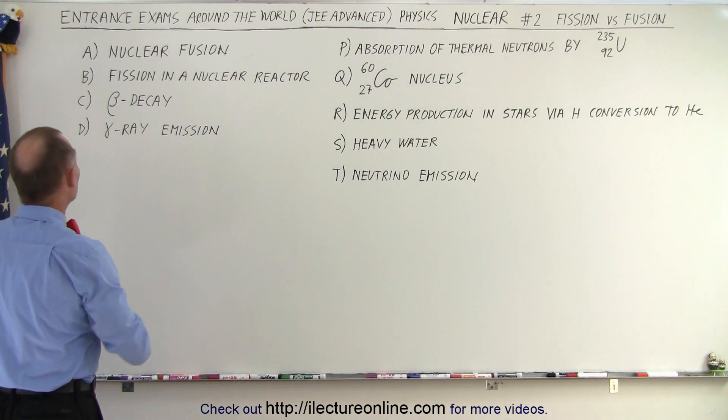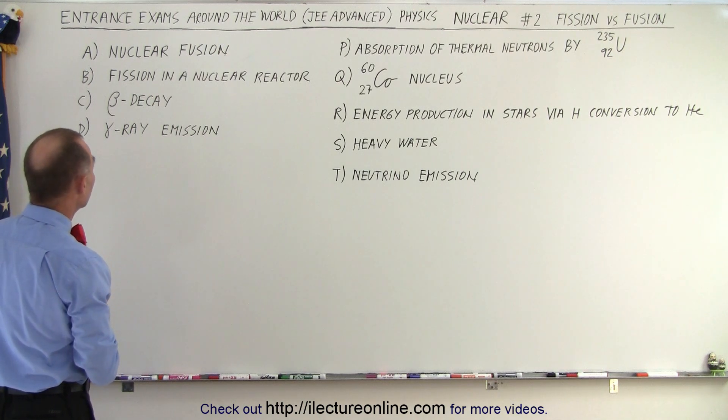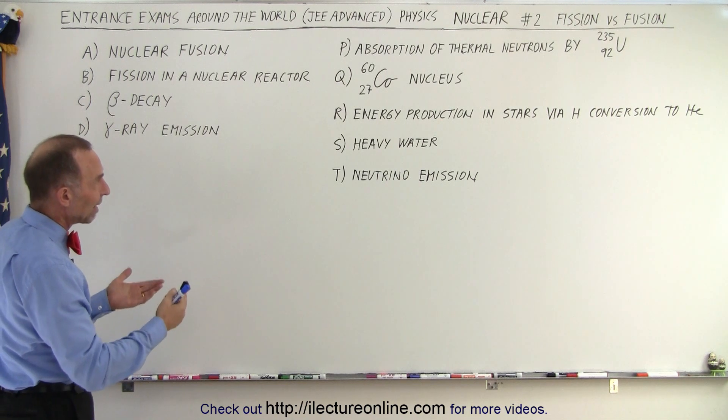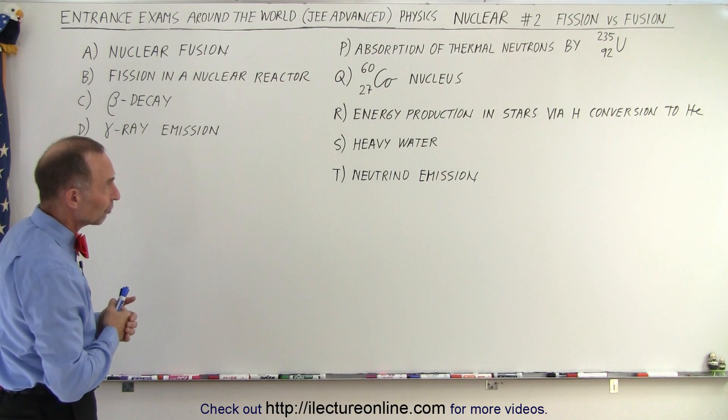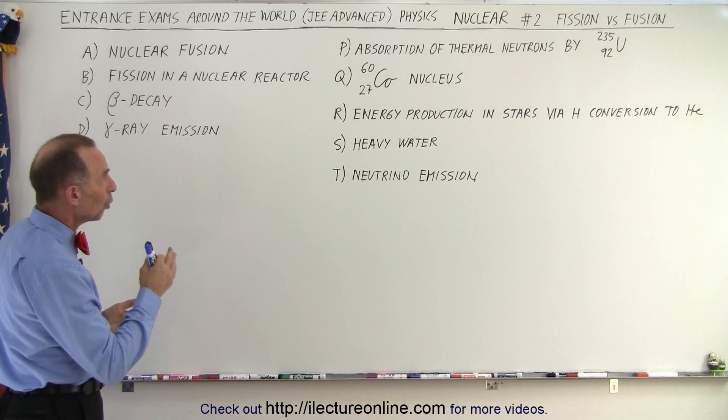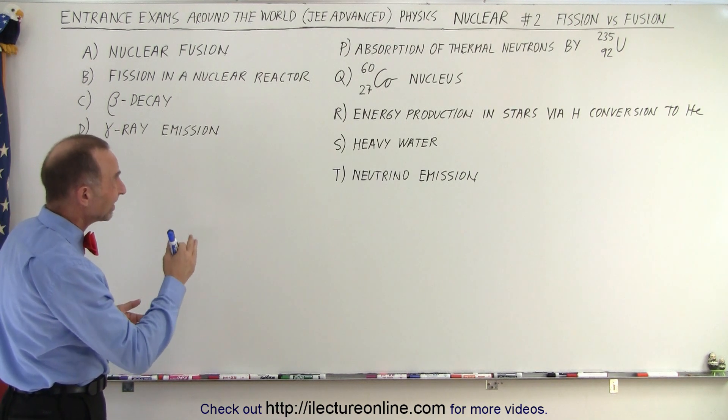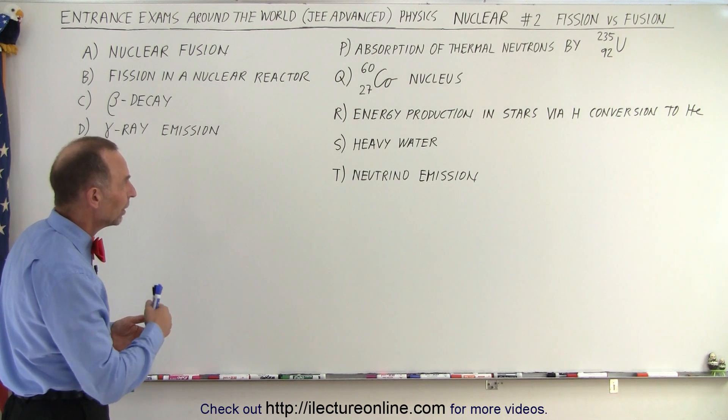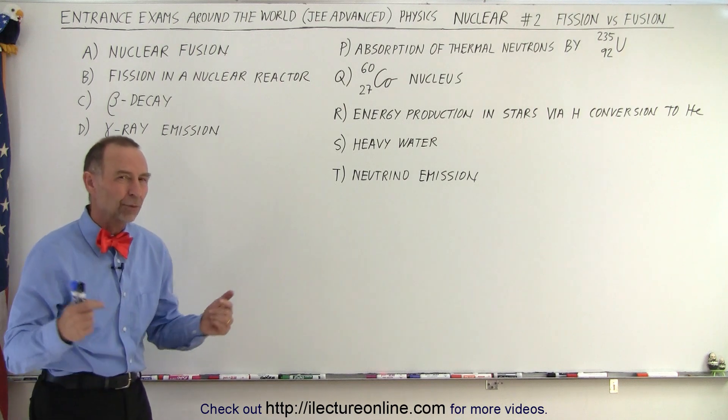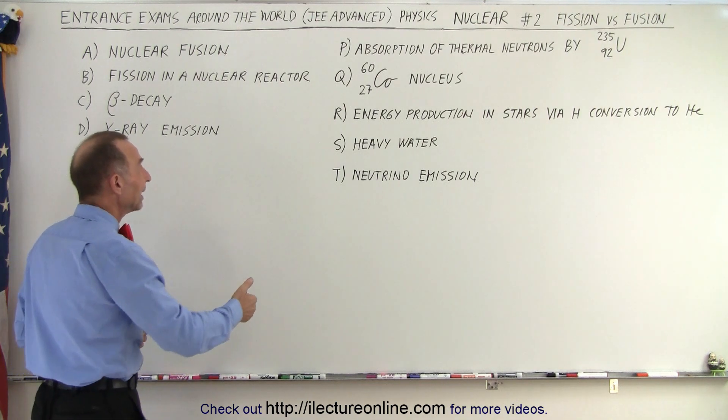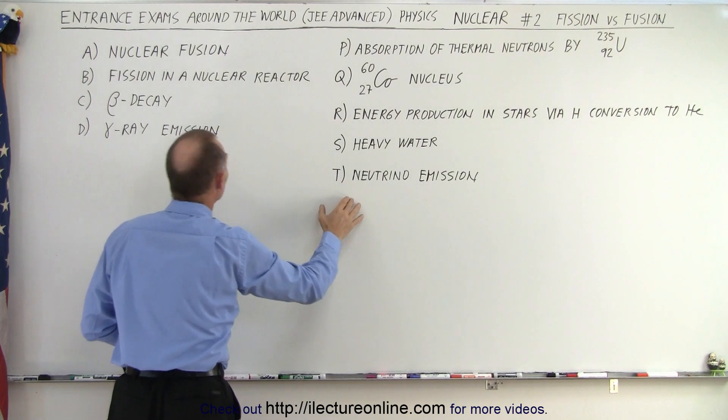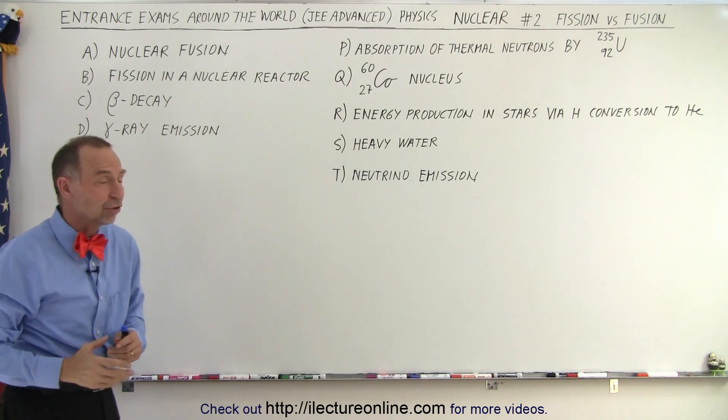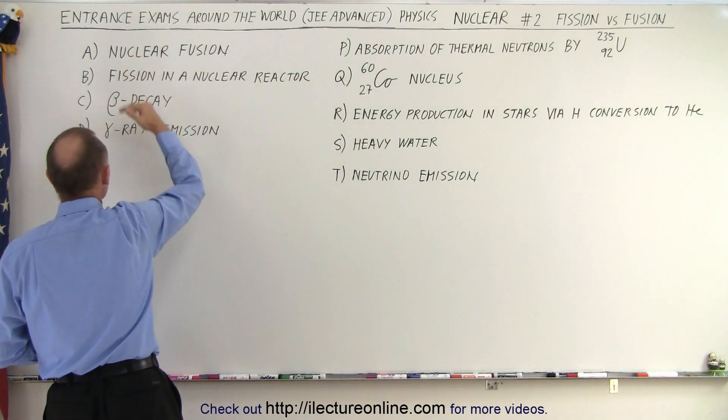On the left side we have four statements: nuclear fusion, fission in a nuclear reactor, beta decay, and alpha ray emission. On the right side we have five statements: absorption of thermal neutrons by uranium-235, cobalt nucleus, cobalt-60 nucleus, the energy production in stars via hydrogen conversion to helium, heavy water, and neutrino emission. We're supposed to pair them up. It's possible that any one of these five is appropriate for any one of these four in any sort of combination. Which of these statements are appropriate for which of these statements right here?